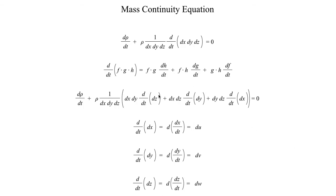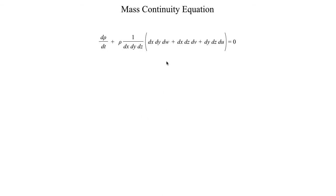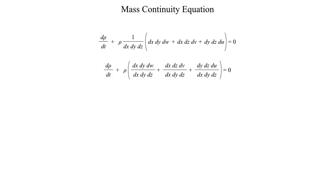Applying that idea to our equation, we get: dρ/dt + ρ · (1/(dx·dy·dz)) times the whole expression with du, dv, and dw. Distributing the volume element into each term, a lot of differentials cancel out — the dx's cancel in one term, the dy's in another, the dz's in the third. All that cancels and we get a clean result, which I'm rewriting as a partial derivative since it should properly be considered a partial derivative.